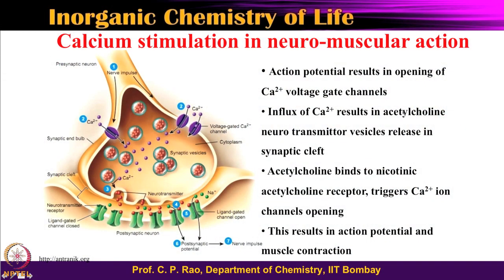The idea is not to teach the biology of neuromuscular action, but to show how a metal ion flow or concentration can trigger many things. The initial influx of calcium generates the acetylcholine neurotransmitter, which binds at the synaptic cleft to the receptor, opens a channel, and changes calcium concentration, thereby changing the action potential. This demonstrates both primary and secondary messenger effects — a remarkable example in bioinorganic chemistry.